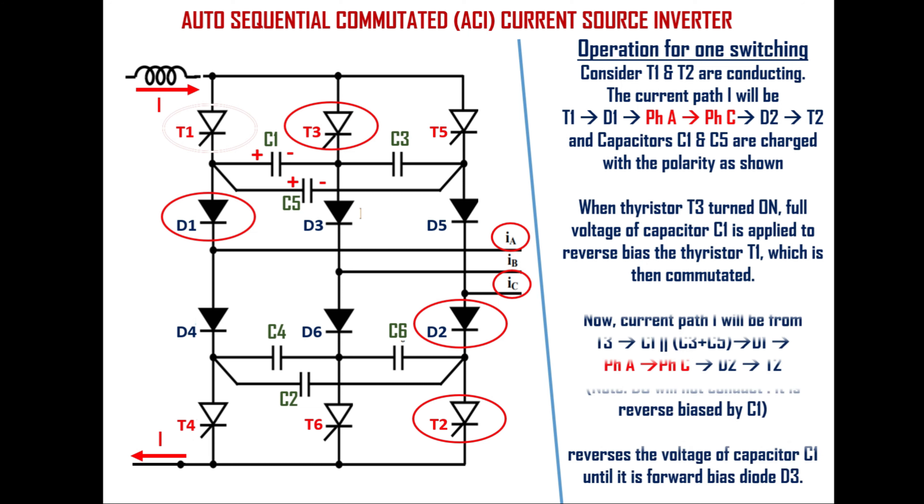Now source current I will flow through the path of thyristor T3, parallel circuit formed by C1 and C3 and C5 in series, diode D1, phase A, phase C, diode D2, thyristor T2 and back to the input source.